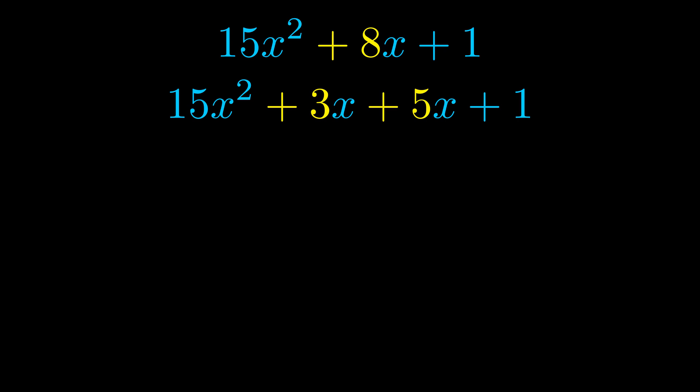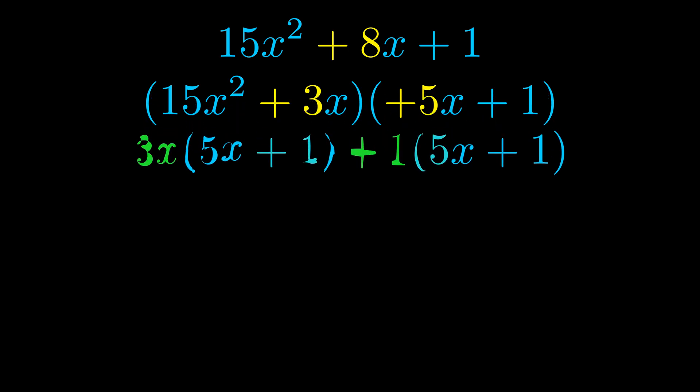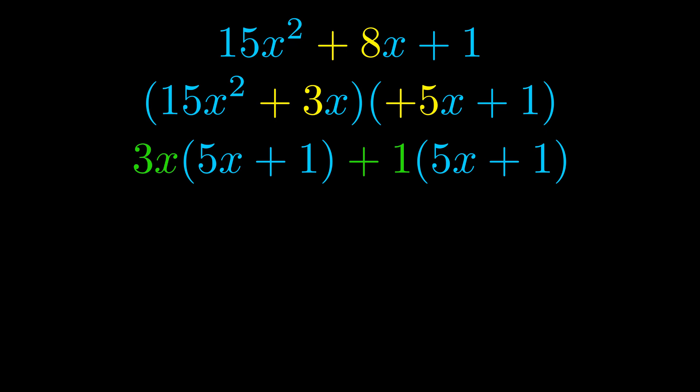Once we've done this, we go ahead and we put parentheses around the first term and the last term. And we do that so that we can take the greatest common factor out of both terms. We can see the greatest common factor is now outside in green. Notice also how what remains inside of the parentheses is the same in both cases.